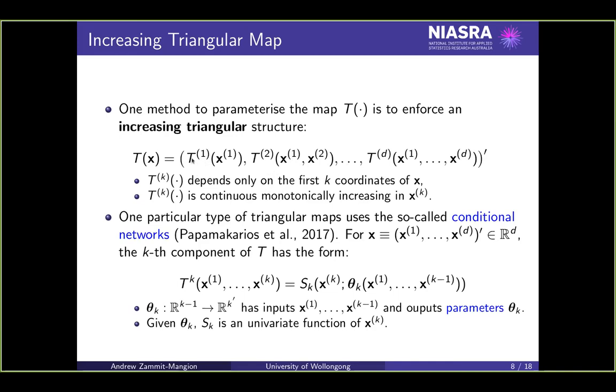All one needs to do is find these monotonically increasing functions in one dimension, but which are themselves functions of the other dimensions. What people use are what are called conditional networks most of the time. This is what a conditional network looks like. Why am I using the word network? Where do neural networks come in? These TKs are very simple functions, just monotonically increasing in one dimension. You can think of SK here as a straight line, as an increasing straight line, for example. But then the gradient of that straight line would have a very complicated relationship to the other dimensions.